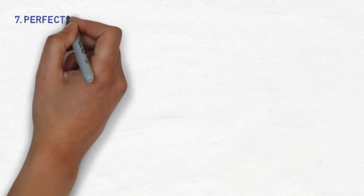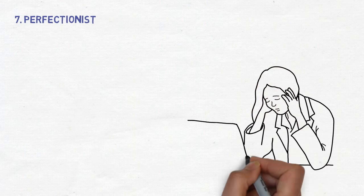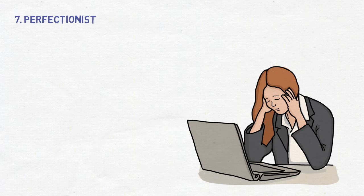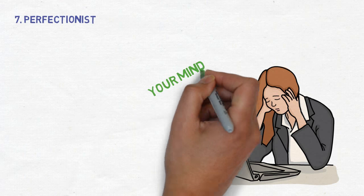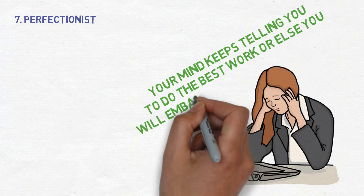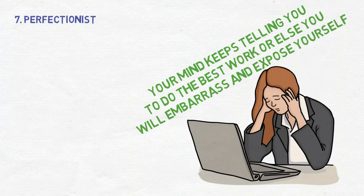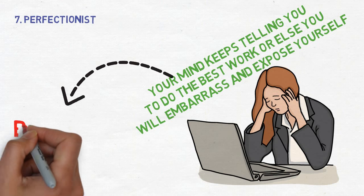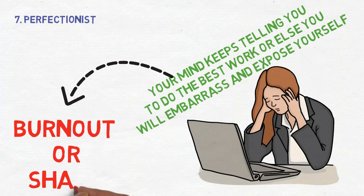Number 7. You tend to be a perfectionist. Because your main worry is the opinion of others, if you end up actually having to do a task or job, you will take a lot of time contemplating on the best way you should go on about it. Your mind keeps telling you to do the best work or else you will embarrass and expose yourself. This can result in burning yourself out or never getting anything properly done because you are just too ashamed of your work which you never consider good enough.